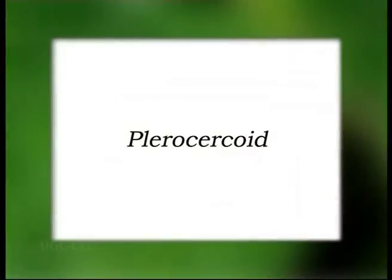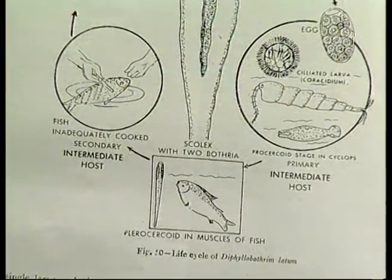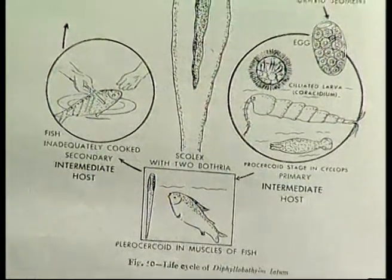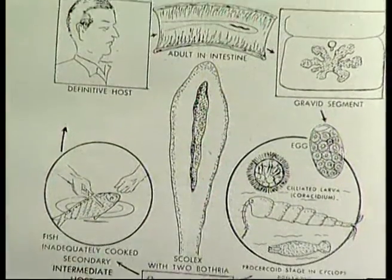The coracidium reaches the Cyclops, enters into the Cyclops, and in the Cyclops they shed off the cilia and become the procercoid. So this is the second stage. This second stage remains in the body of the Cyclops or Diaptomus, and once this is taken by the second host — it has the primary host, it has the definitive host, then we have intermediate host number one which is the Cyclops, then we have intermediate host number two which is a fish. So this Cyclops is taken by the fish as food.